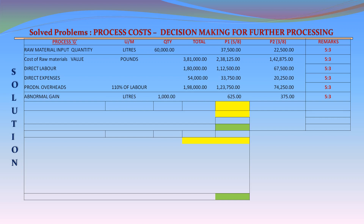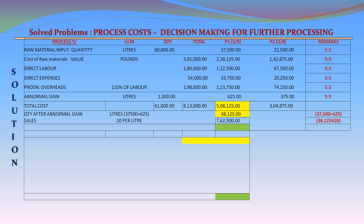Abnormal gain: 1,000 liters — P1: 625 liters at 5/8; P2: 375 liters at 3/8. Total liters including abnormal gain: 61,000. Total cost incurred: £813,000 — P1 at 5/8: £508,125; P2 at 3/8: £304,875. Quantity after abnormal gain for P1: 37,500 + 625 = 38,125 liters. Sales at £20 per liter: 20 × 38,125 = £762,500 for P1. Profit for P1: £762,500 − £508,125 = £254,375.